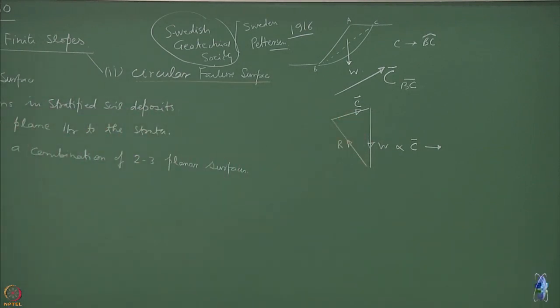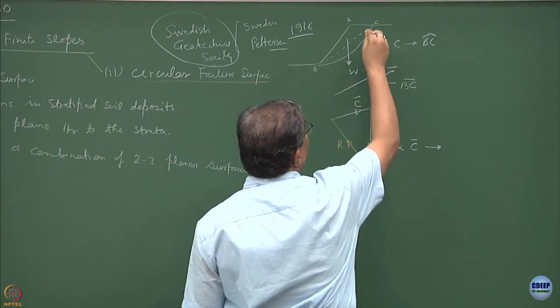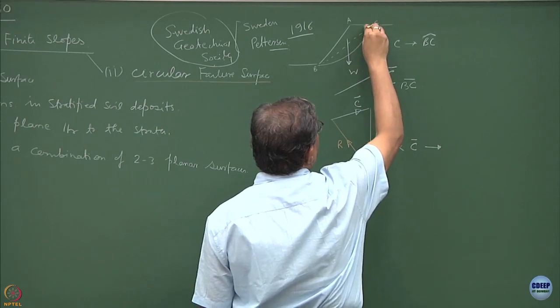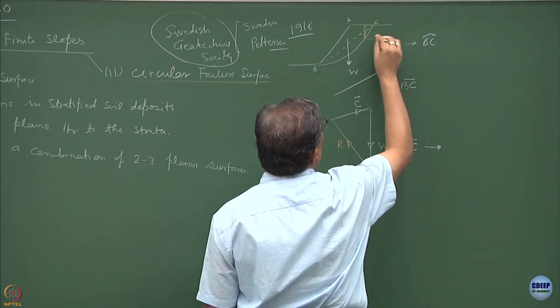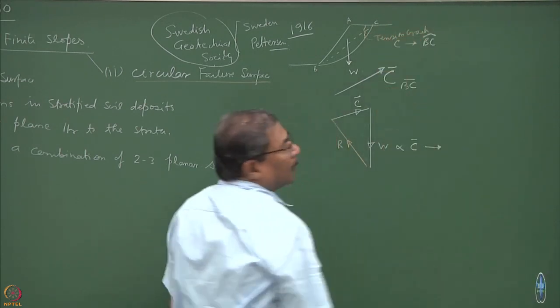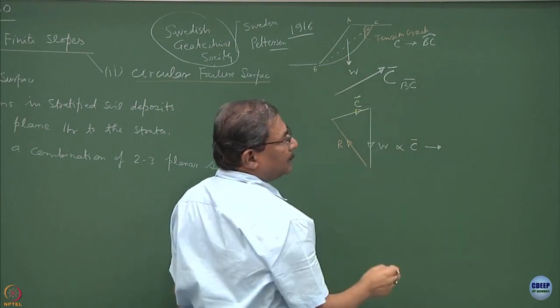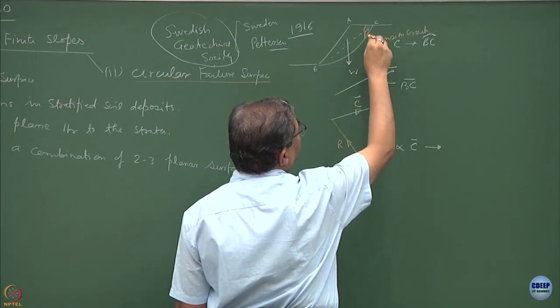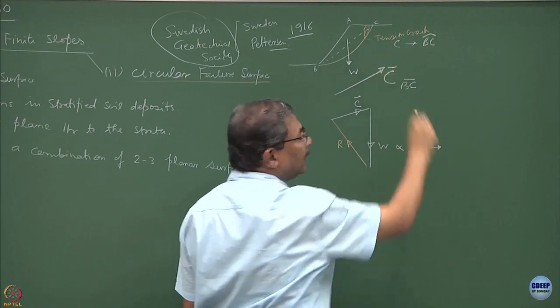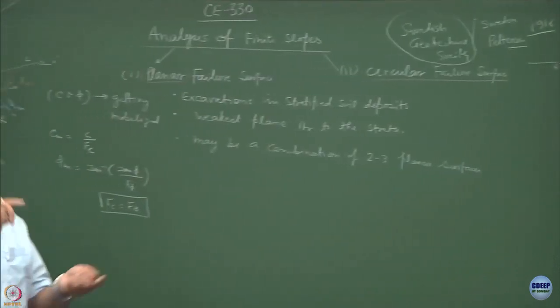Remember what we did when discussing tension cracks occurring in pure cohesive materials. This is the tension crack. From the lateral side, there is no force coming on this block. That means W is going to be balanced by the cohesion which is getting mobilized on the surface. If W tends to 0, C also tends to 0.